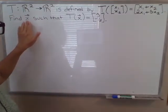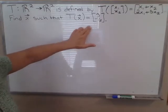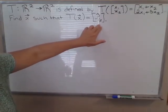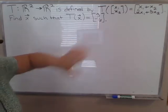And we're supposed to find a vector, so an input vector x, such that the output, or the image of x, is 3, negative 6.